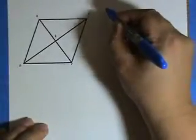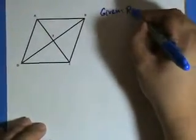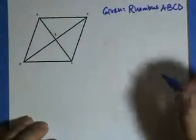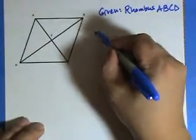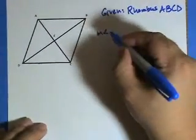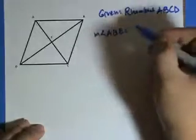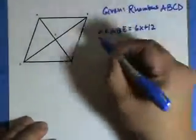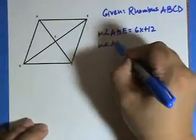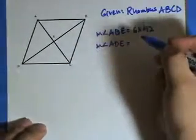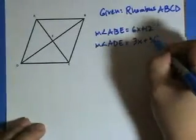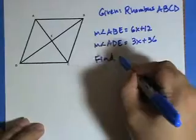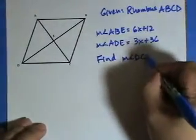Okay, that's example one. Example two, again we're given a rhombus. We're given measure angle ABE equals 6x plus 12 and measure of angle ADE equals 3x plus 36. We're asked to find the measure of angle DCE.